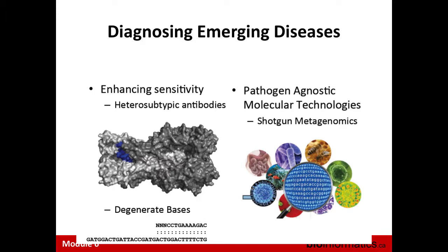If we want to diagnose emerging diseases, one approach is to enhance the sensitivity of existing diagnostics. For example, you can generate heterosubtypic antibodies — antibodies directed not at a specific antigen like H1N1, but at an exposed but conserved region of a surface molecule. For influenza, the H stands for hemagglutinin and the N for neuraminidase. Both molecules are exposed on the surface and have highly variable antigenic regions but also some conserved, partially exposed regions.